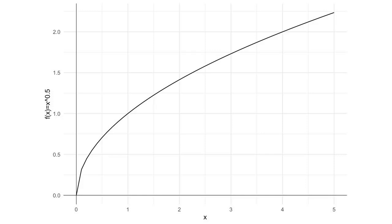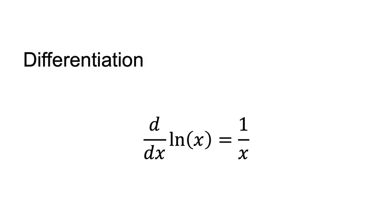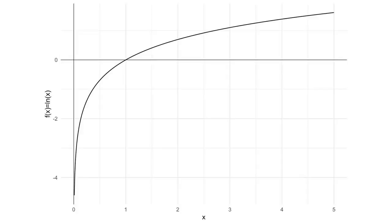The derivative of the logarithmic function is d/dx of ln x equals 1/x. This derivative is positive for all values of x for which ln x is defined. Therefore ln x is increasing in x. You can see that ln x is increasing for all values for which it is defined in this plot.